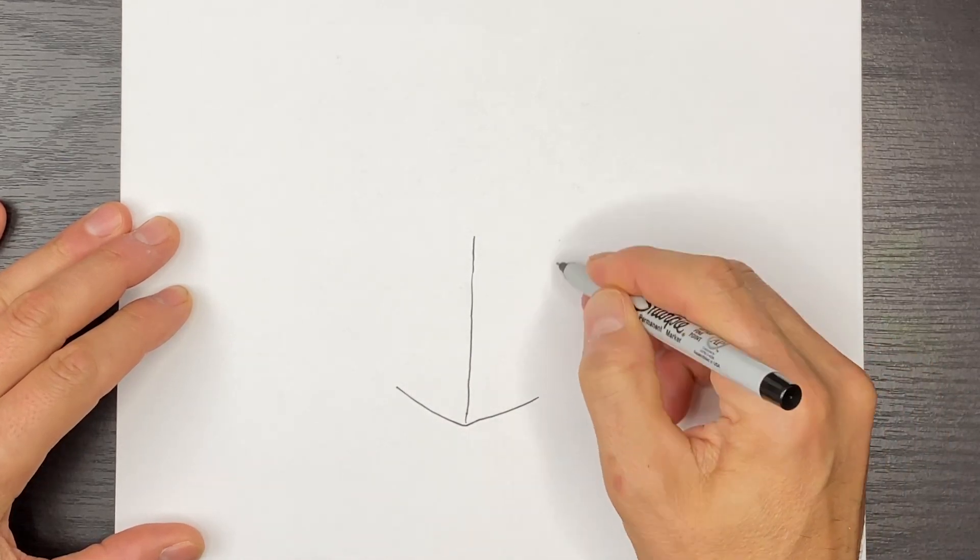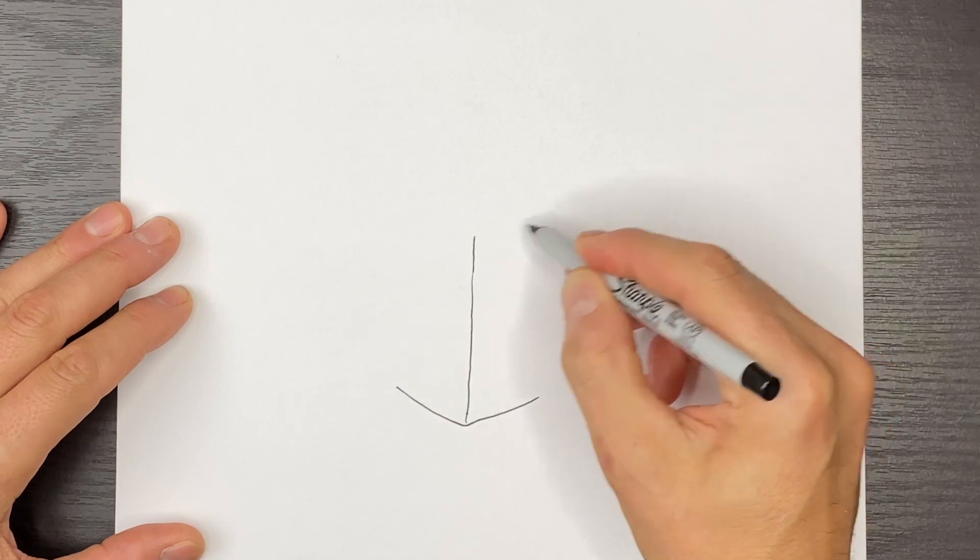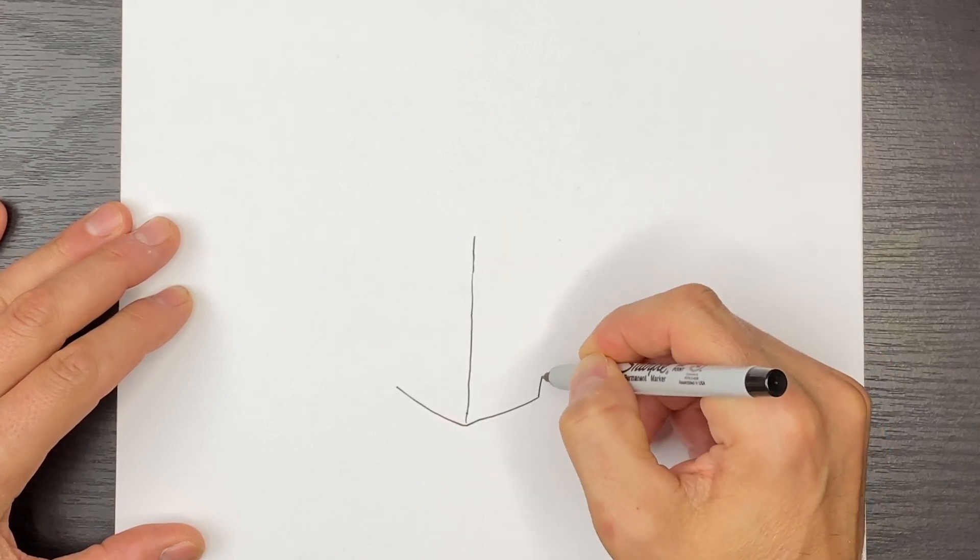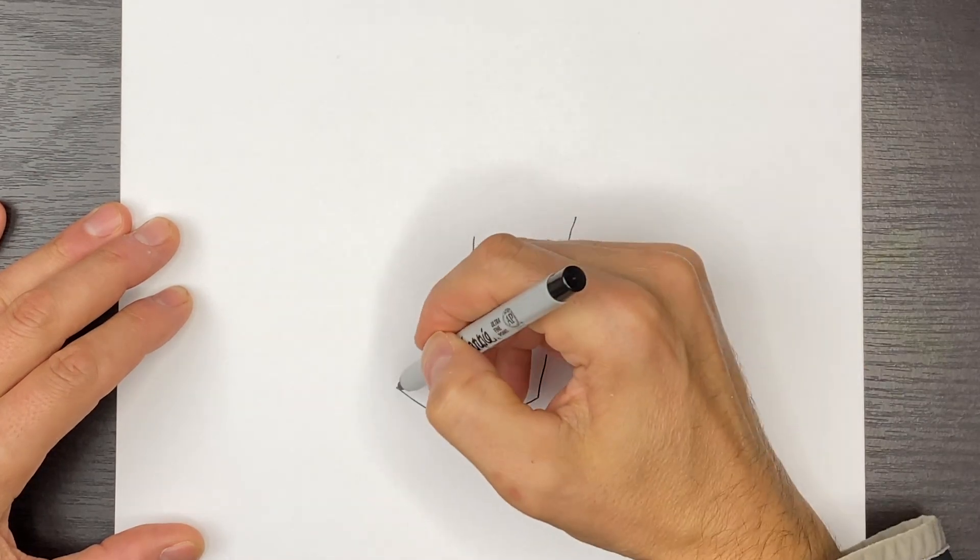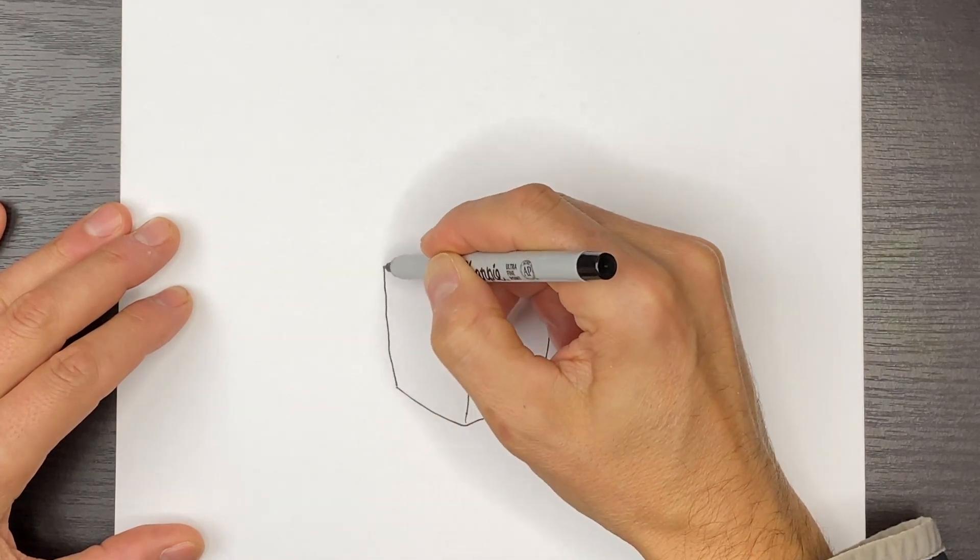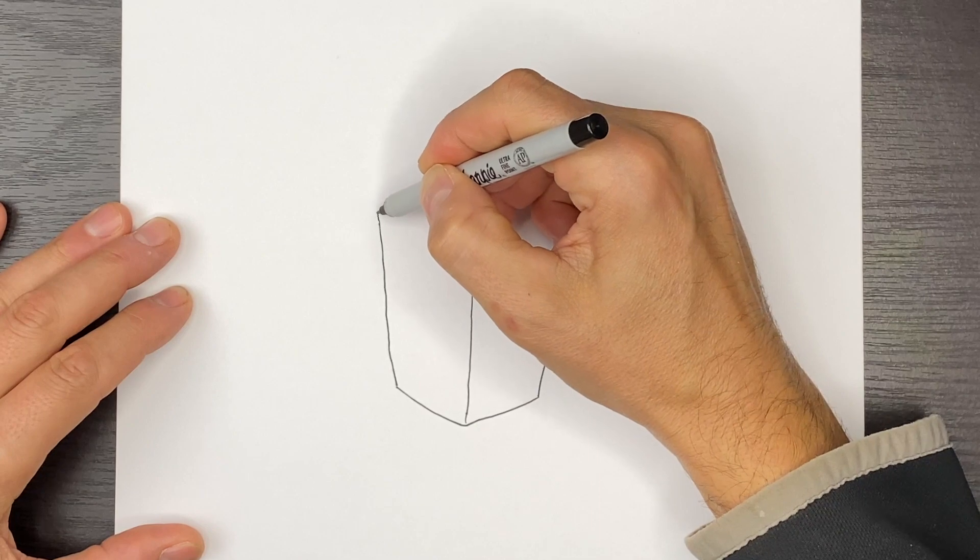Then as you come up, we're going to get a little bit wider. So we're going to go up and get slightly wider. Then we'll do the same on this side, coming up and getting wider like that.